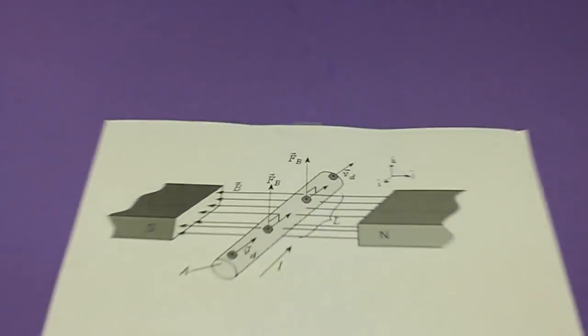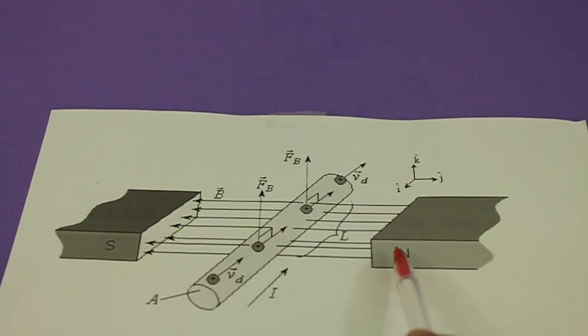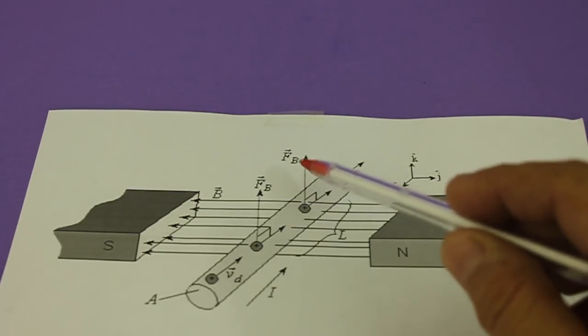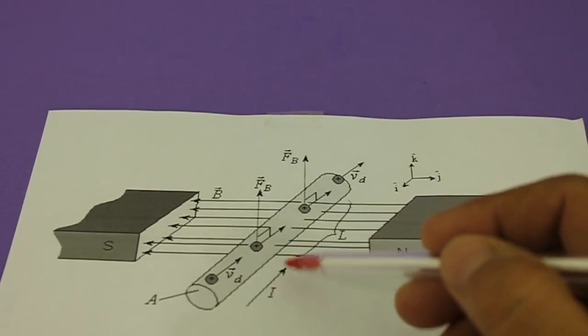Of course, if we reverse the direction of the magnetic field or the direction of the current, then the force on the conductor will also reverse and point downwards.